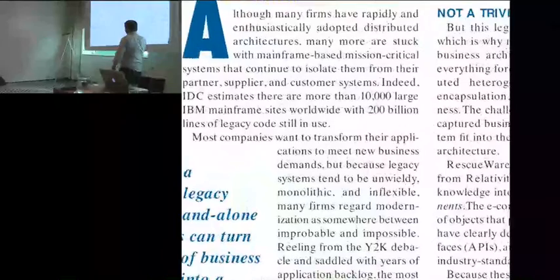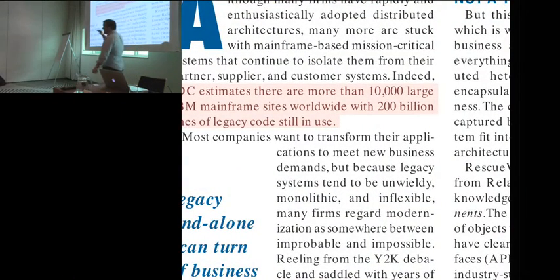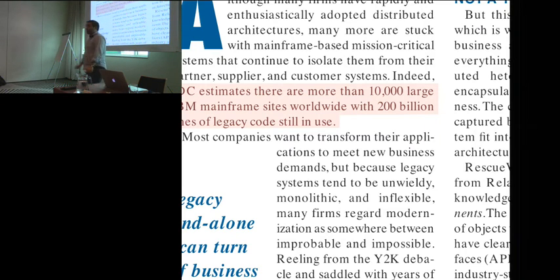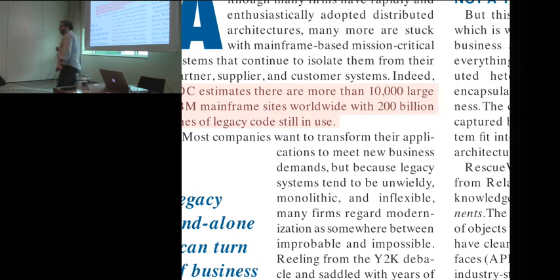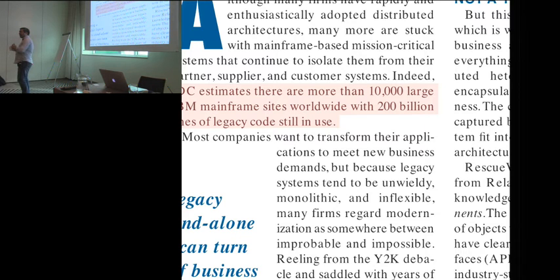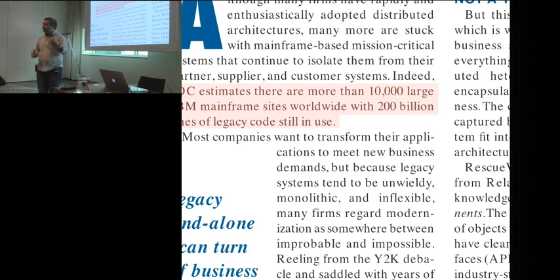One thing they noticed: a paper from around 2000 estimated that there were more than 10,000 large IBM mainframe systems still in use, totaling 200 billion lines of code. That's the troubling part. On one hand we're creating software faster and faster, but on the other hand we seem to be unable to get rid of old systems.